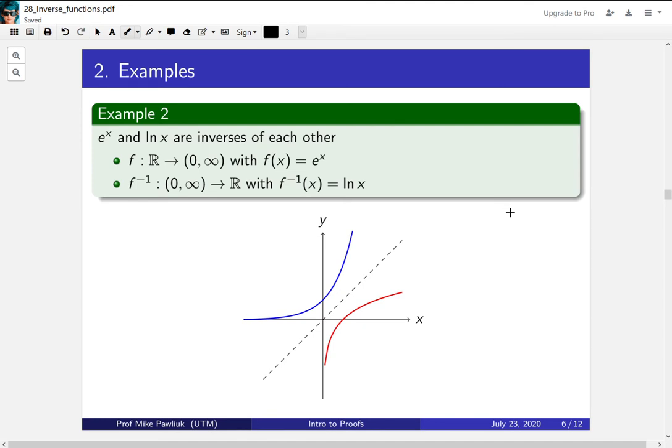Let's look at another example. e to the x and log x are inverses of each other. So let f be the function from the reals to (0,∞), which is e to the x. And then the inverse function log will go from (0,∞) to the reals. And you can see in a picture very clearly that they're inverses of each other. Here's e to the x. We reflect it along the line y equals x and get log x.